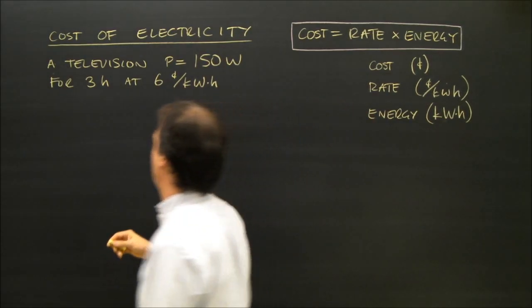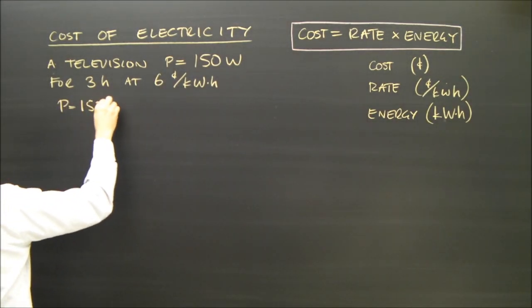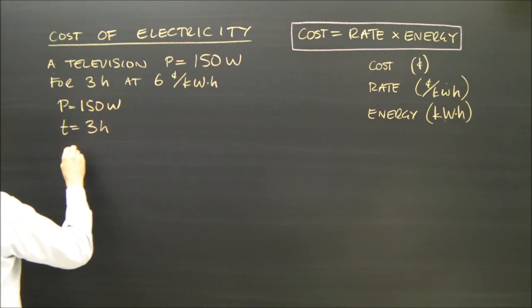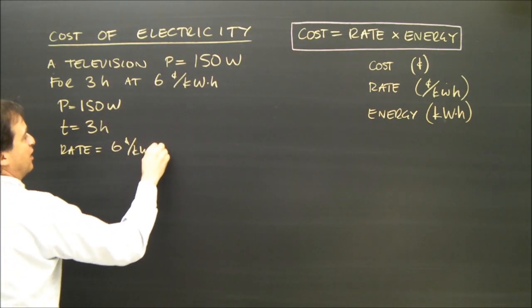So I want to know what the cost is. Well, first I've got to write down what I've got here. Power is 150 watts, the time is three hours, and the rate is six cents per kilowatt hours.